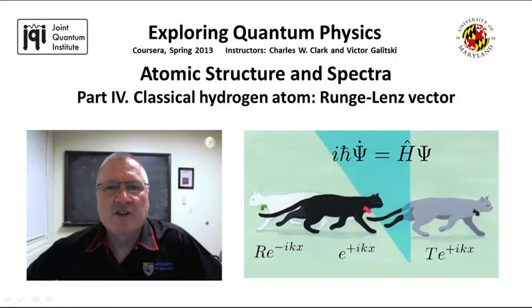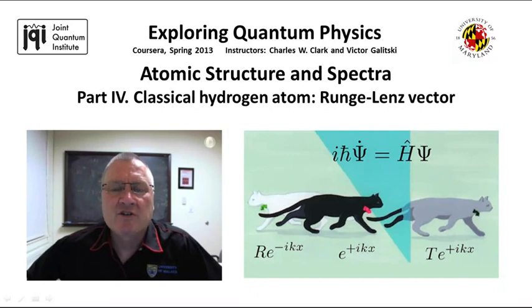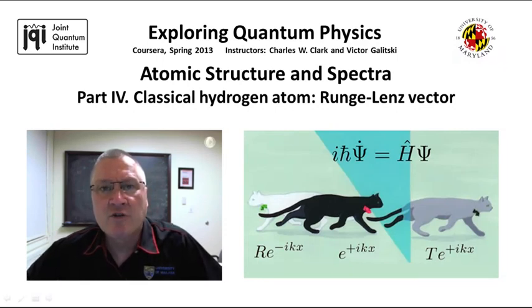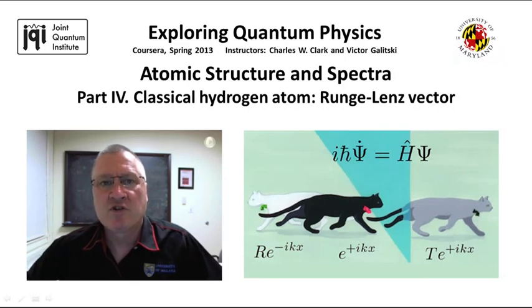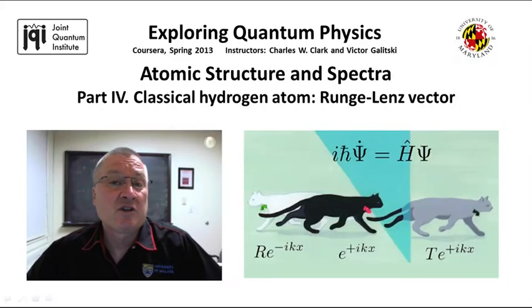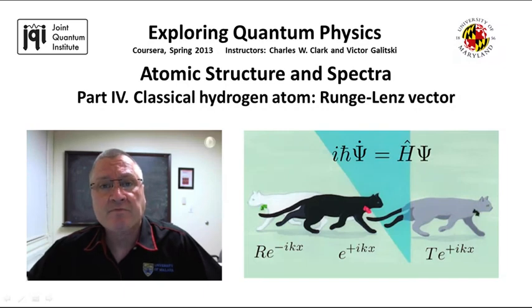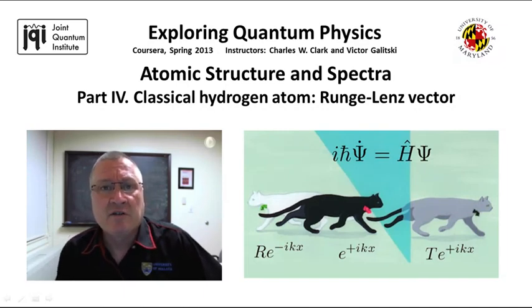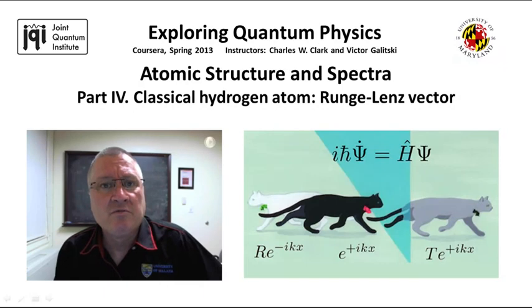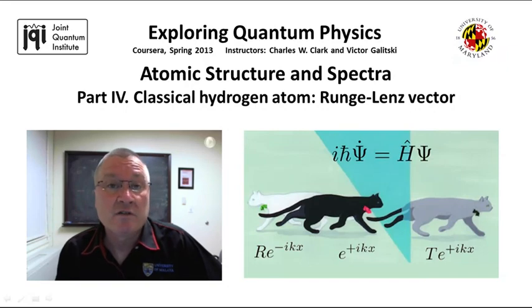Welcome back everyone to Exploring Quantum Physics. Now we're going to complete the solution of the hydrogen atom according to classical mechanics. This brings in the identification of a non-trivial constant of the motion, something that was known for many years by people studying planetary motion, but emerged as something of great importance in the development of quantum mechanics. I think you'll see that it points to directions that are very fruitfully used when solving the Schrodinger equation for complex systems.